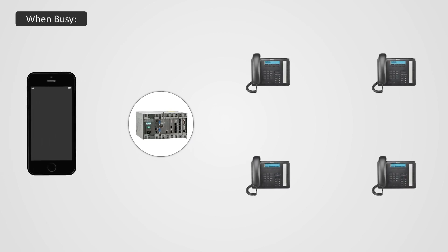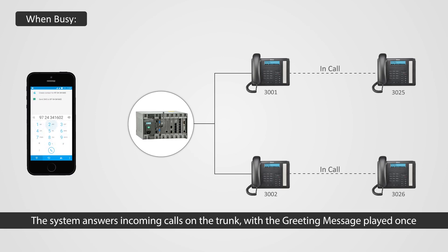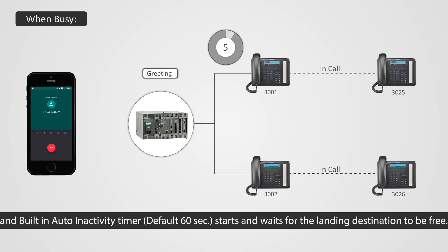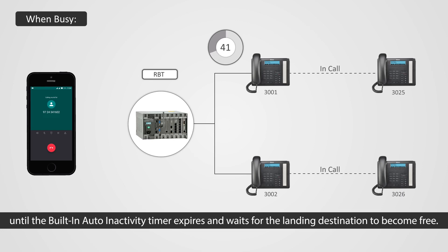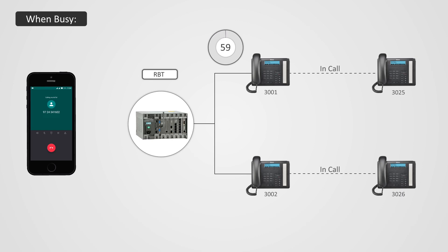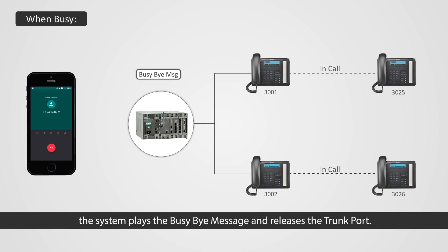When busy: the system answers incoming calls on the trunk with the greeting message played once, and the built-in auto-inactivity timer — 60 seconds by default — starts, waiting for the landing destination to be free. The system plays the ring back tone message repeatedly until the built-in auto-inactivity timer expires, waiting for the landing destination to become free. If none of the landing destinations become free after expiry, the system plays the busy-by message and releases the trunk port.